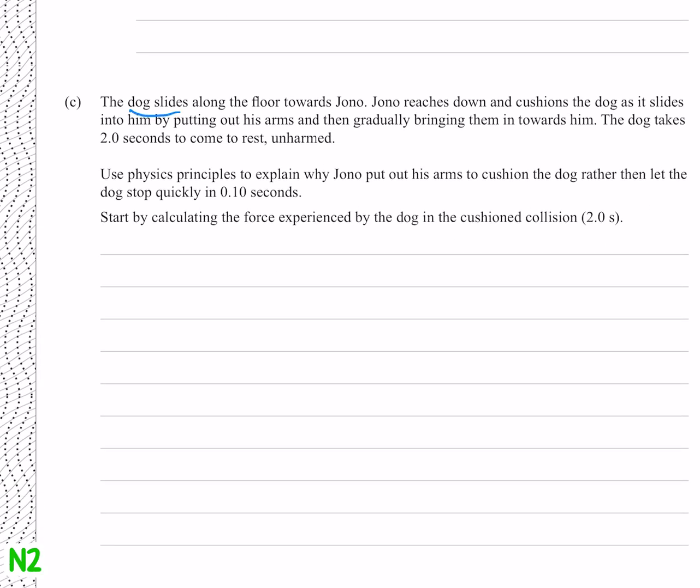And we have the dog sliding, and Jono reaches out and cushions the dog. Use physics principles to explain why Jono put out his arms to cushion the dog, rather than let the dog stop quickly in 0.1 seconds. Well that's because the force is going to be less.